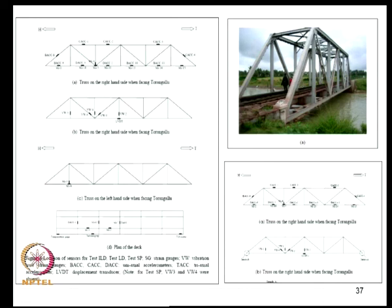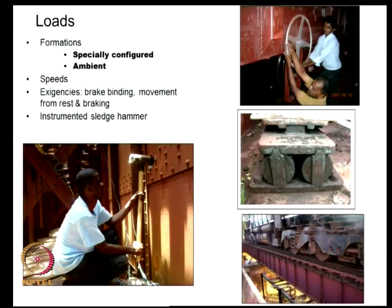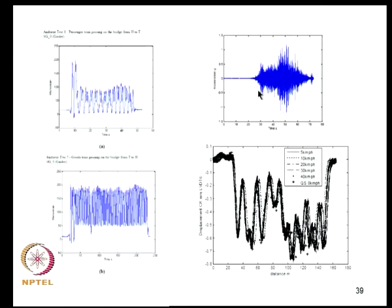After obtaining data from this existing bridge, a finite element model can be made and the same tests conducted numerically. However, the predicted sensor readings will not exactly match field observations. Various tests can be done, including impulse response functions to extract frequency response functions. Typical readings include strain gauge data, accelerometer readings, and LVDT readings — this type of data emanates from existing structures.